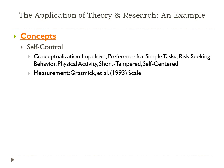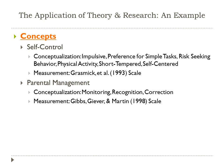The key concepts of this theory are self-control, conceptualized as being impulsive, having a preference for simple tasks, risk-seeking behavior, a preference for physical activity, being short-tempered, and being self-centered. I measured self-control using the Grasmick et al. 1993 scale, which measures all six dimensions. Another key concept is parental management, conceptualized as monitoring of children's behavior, recognizing bad behavior when they see it, and correcting said bad behavior. To measure this, I used Gibbs, Giever, and Martin's 1998 parental management scale.